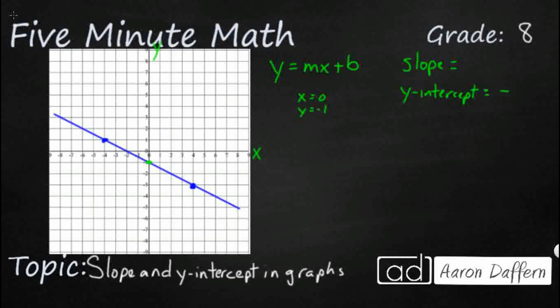So our y-intercept is negative one because we would use the coordinate pair zero, negative one. So if x is zero, what is y? And in this case, negative one. Super easy.